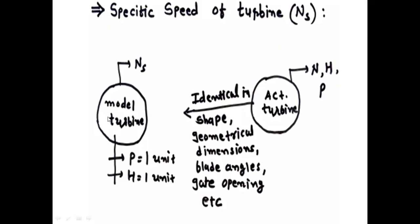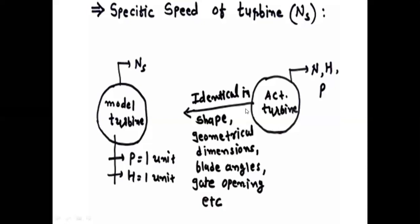Now, design one model turbine which is operated under a unit head — that means H is equal to one meter — and produces one unit power, that means P is equal to one kilowatt. This design model turbine must be identical with the actual turbine in geometrical dimensions, meaning blade angle, gate opening, etc. The speed of that model turbine is considered as the specific speed of turbine.